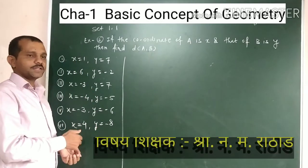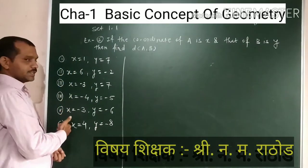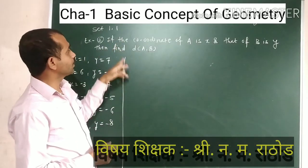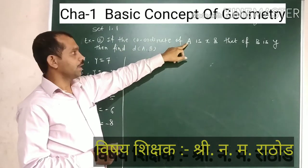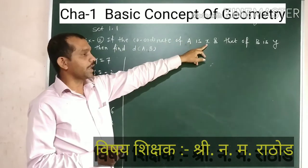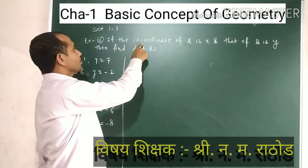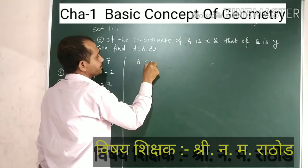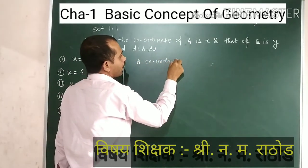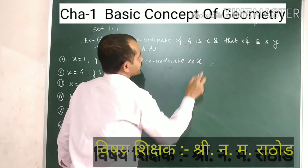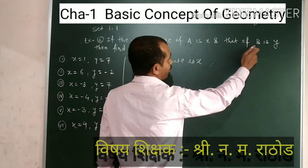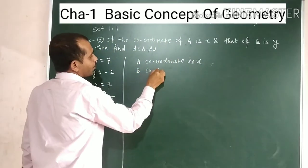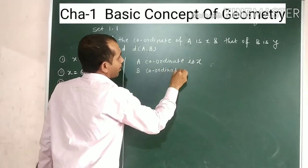This problem set has examples 1, 2, 3, 4, 5, and 6. Example 1: If the coordinate of point A is x and that of point B is y — the coordinate of A is x and the coordinate of B is y.